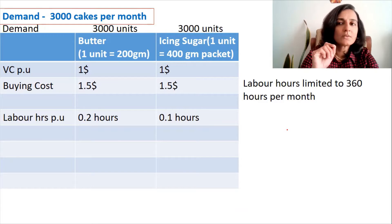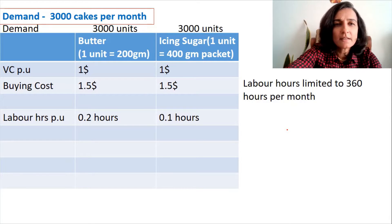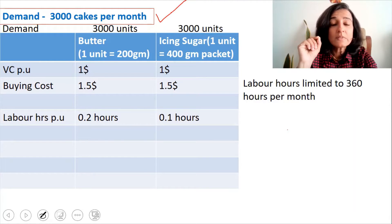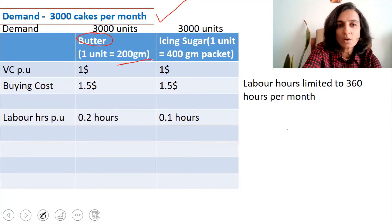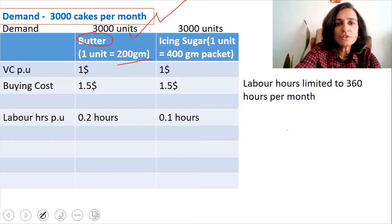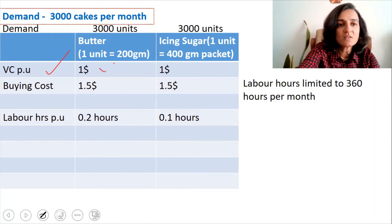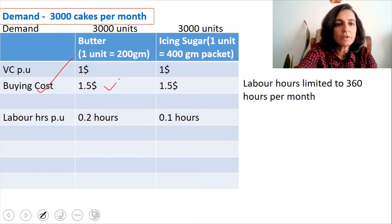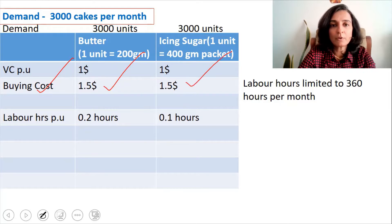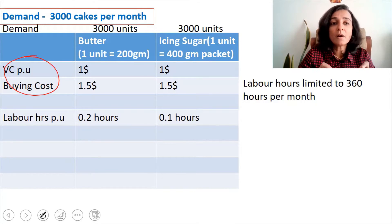Now let's get to the details of the problem. The demand for cakes is 3,000 cakes per month. The raw materials required are butter — one unit is 200 grams, demand is 3,000 units — and icing sugar — one unit is a 400 gram packet, demand is 3,000 units. The variable cost per unit of butter is $1 and icing sugar is also $1. Buying cost is $1.5 for butter and $1.5 for icing sugar. Both the variable cost and the buying cost for butter and icing sugar are the same.